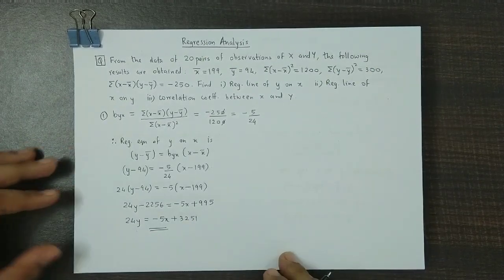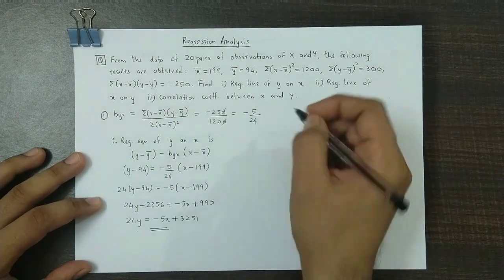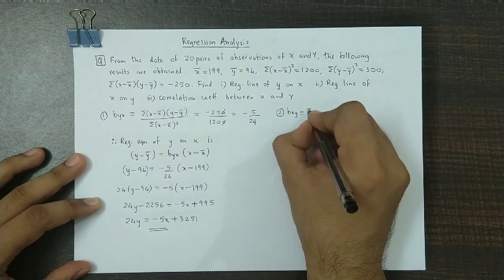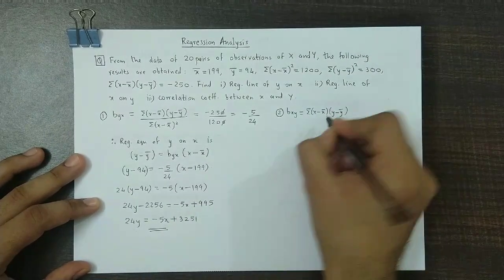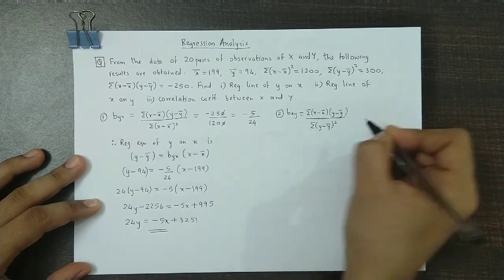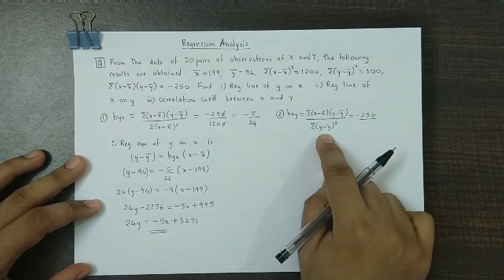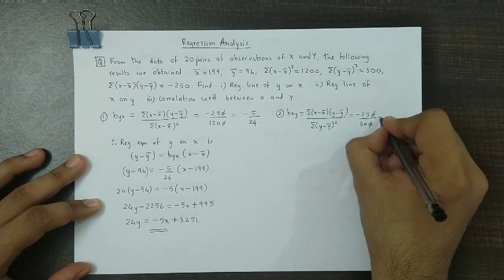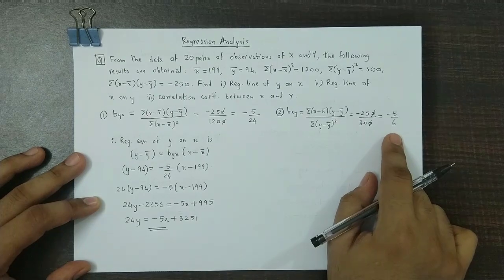Next we calculate bxy. Step number 2: bxy is calculated as summation of (x minus x bar)(y minus y bar) divided by summation of (y minus y bar) squared. The numerator is minus 250 and the denominator is 300. Cancelling and reducing, bxy equals minus 5 by 6.